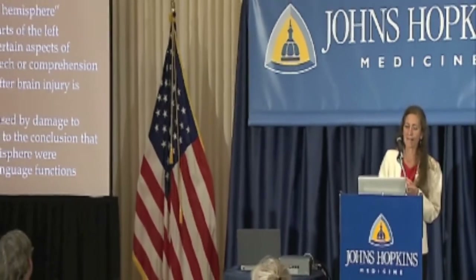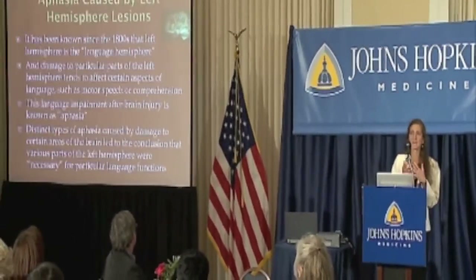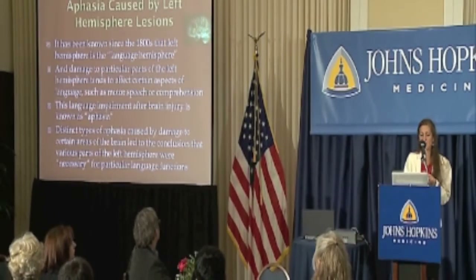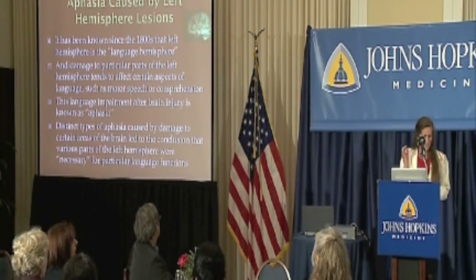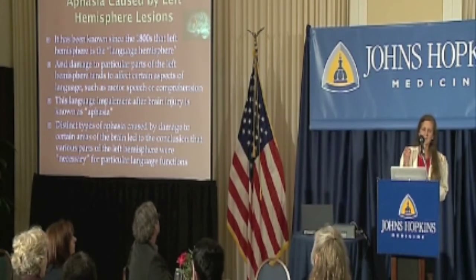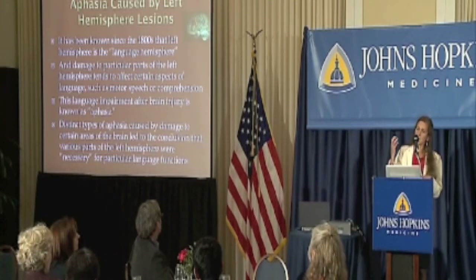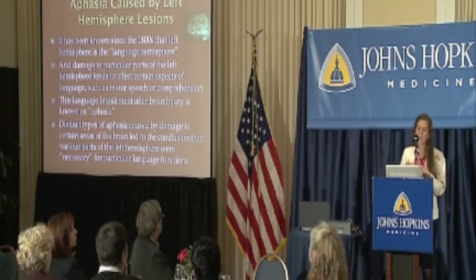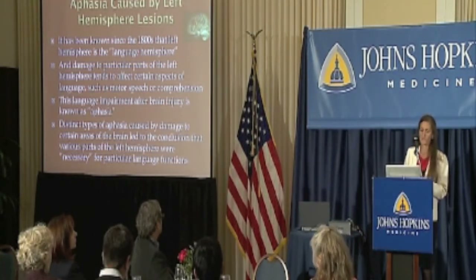I'm going to be talking about aphasia, which is a language problem caused by any kind of brain injury. It's been known since the 1800s that damage to the left hemisphere can cause problems with language, and that damage to specific parts of the left hemisphere can cause different kinds of language problems. The assumption was that if a lesion in the frontal part of the left hemisphere consistently caused someone not to be able to talk, then that part of the brain was necessary for speaking.